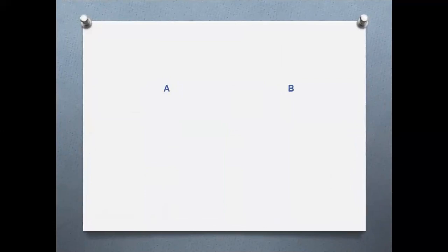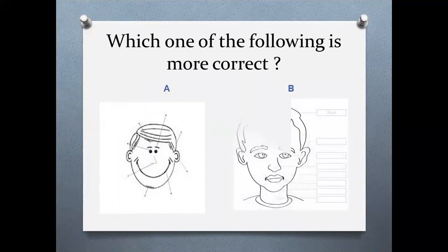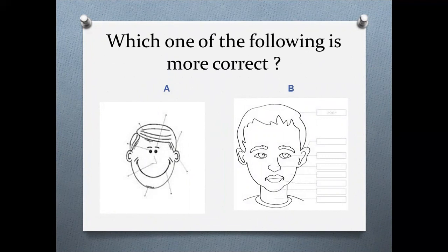Now children, I am going to show you two pictures. Now you will observe and decide which one is correct. So, here they are. Picture A and picture B. Now observe and tell me which has a better way of labeling? Yes, B. Correct.